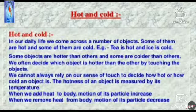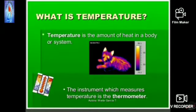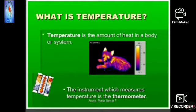When we add heat to a body, the motion of its particles increases. Temperature is the amount of heat in a body or system. The instrument which measures temperature is called a thermometer. The terms hot and cold are only relative terms — there must always be a reference body with respect to which we say a given body is hot or cold. Therefore, it is important that we use an instrument rather than our own judgment to measure temperature.